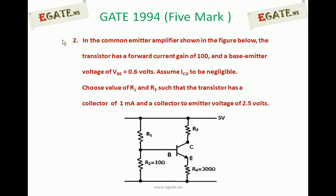In the common emitter amplifier shown, the transistor has a forward current gain of 100 and a base emitter voltage VBE equals 0.6 volts. Assume IC0 is negligible.